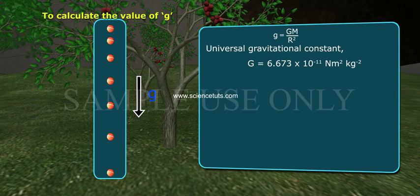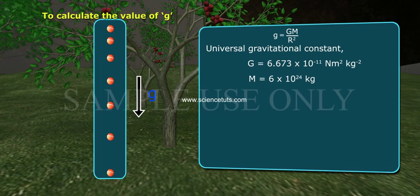Universal gravitational constant G equals 6.673 × 10⁻¹¹ Nm² kg⁻². M equals 6 × 10²⁴ kg. r equals 6.4 × 10⁶ m.